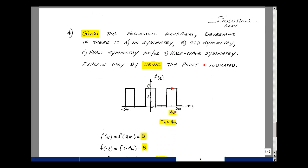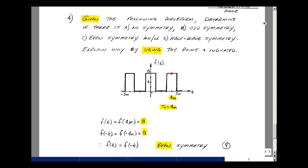And problem number four, we're given a waveform, and that's to determine whether it has no symmetry, odd symmetry, even symmetry, and or half wave symmetry. And could you use a single point to argue the case of symmetry? The point that's shown here is at four milliseconds, and that actually would be one period. So let's take a look at f(t) when t is equal to four milliseconds. That's equal to eight volts.